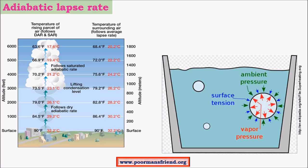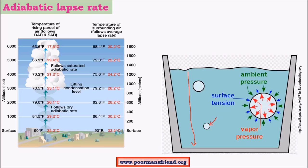First let us answer two questions: Why does a bubble of water rise from bottom to top in a pond or any other water body? And why does its size increase as it moves from bottom to top? First, as we move into deeper layers of a pond, the pressure increases. As a result, the size of the bubble is small at the bottom layers as the pressure from all directions is greater, and due to this pressure the size of the bubble is quite small.